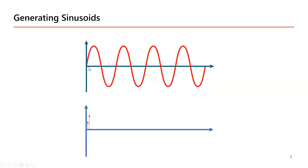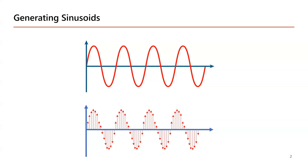If I sample the sine wave, these are the discrete values I will receive. With a sufficient number of samples you should be able to represent the sine wave with good accuracy. As the number of samples increases, or as you reduce the sampling period, the accuracy will be much better, but that may require more memory and you have to run at a much higher clock frequency.